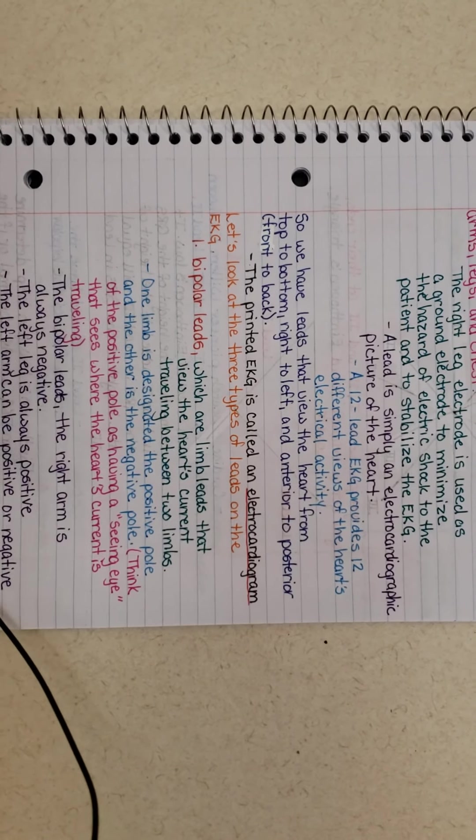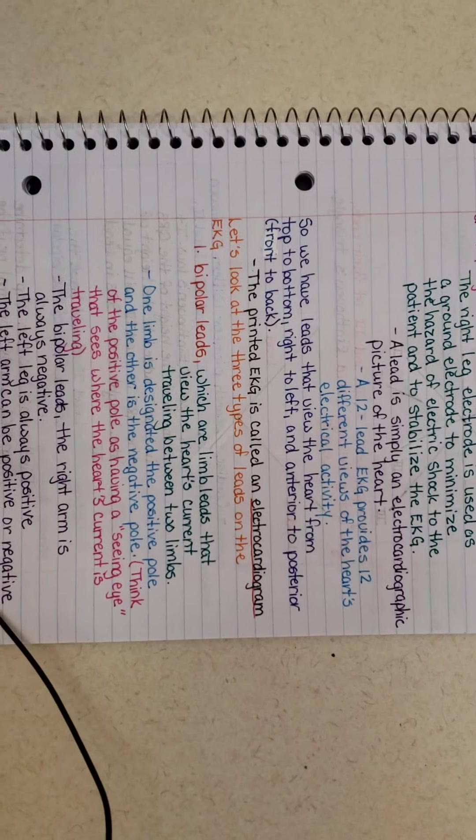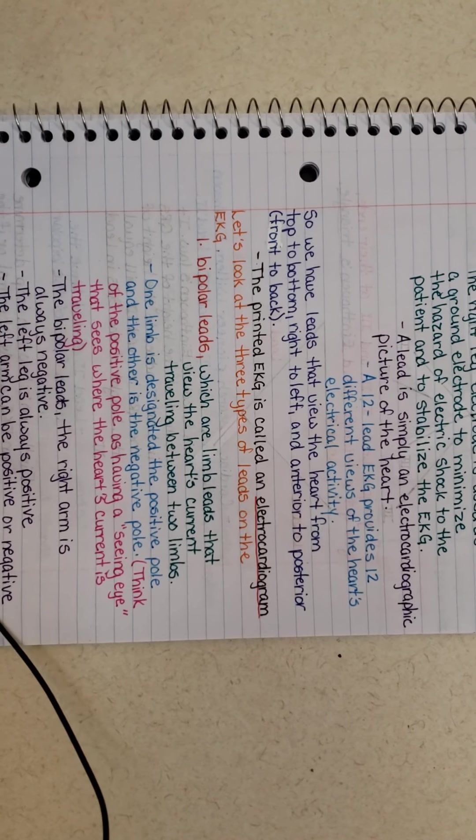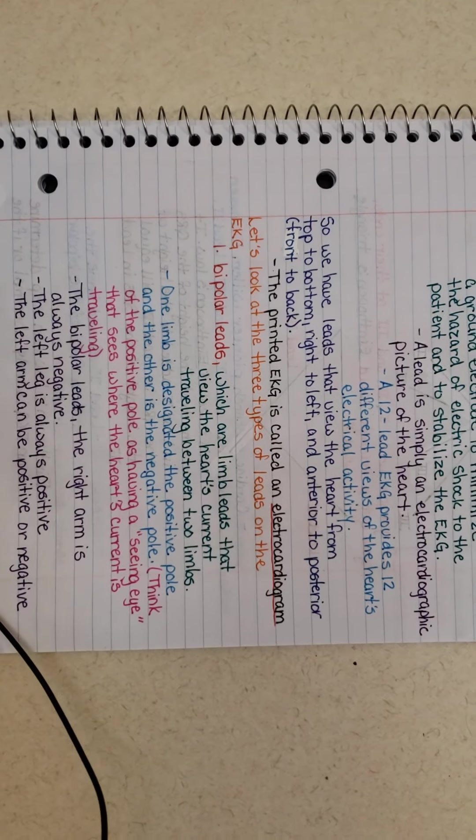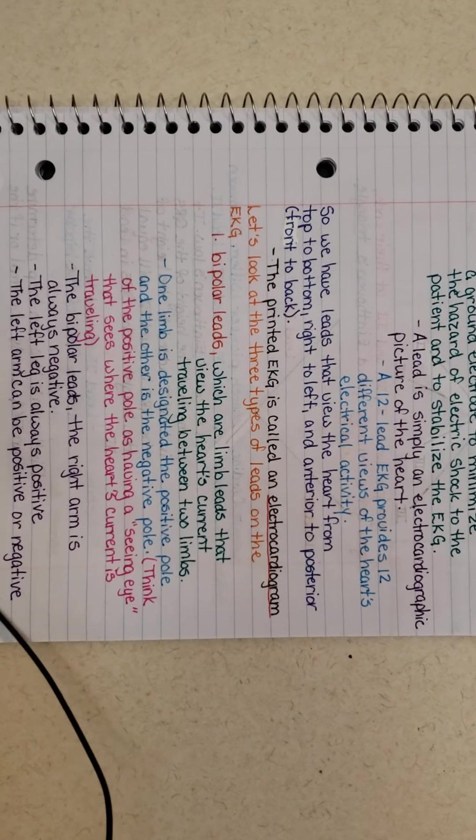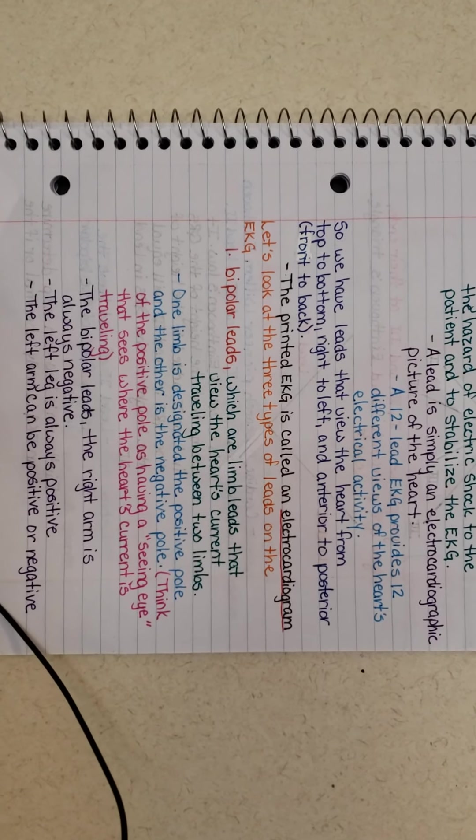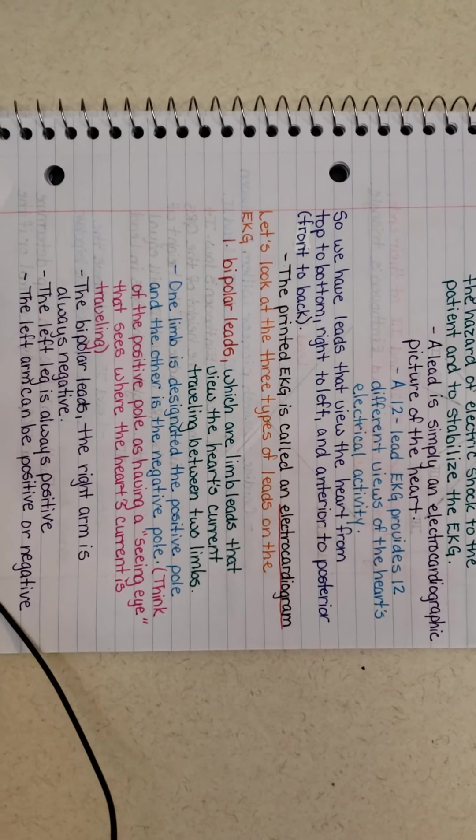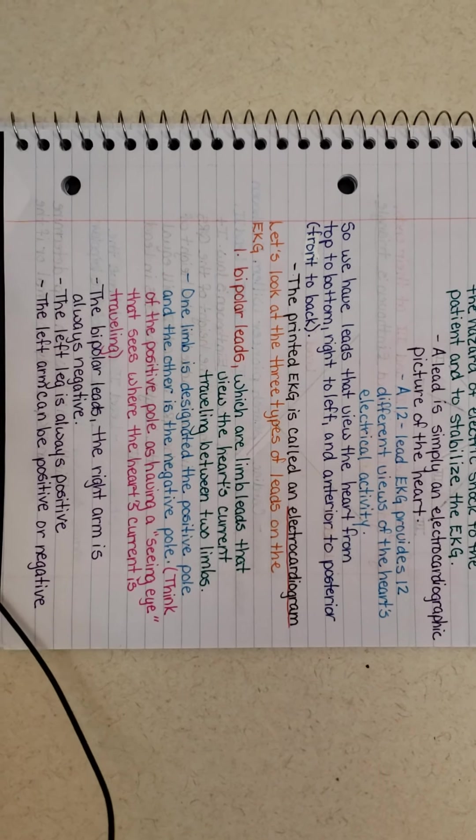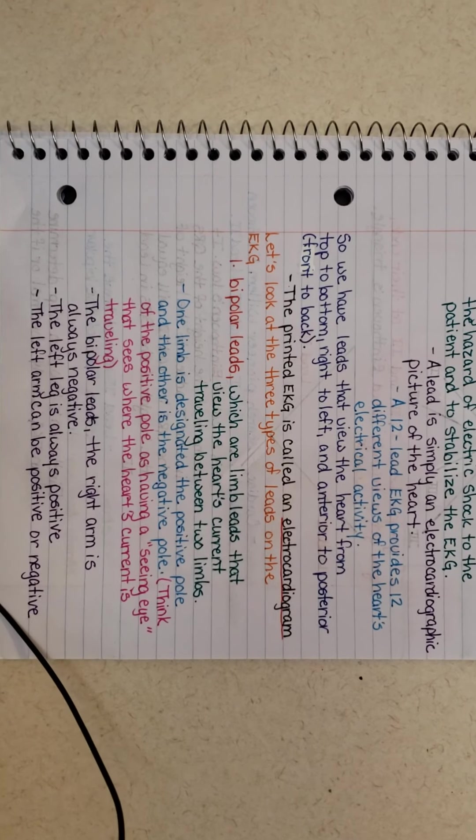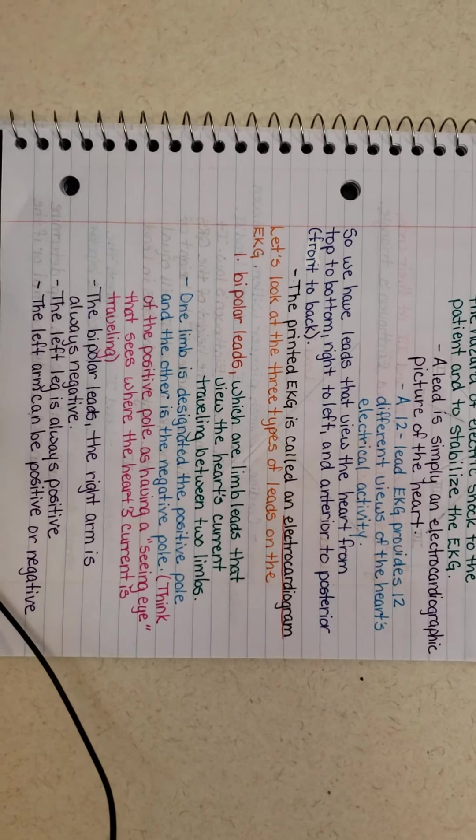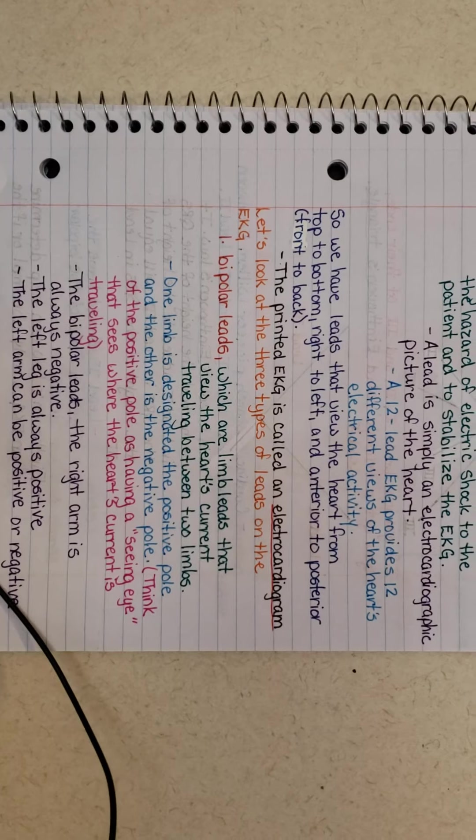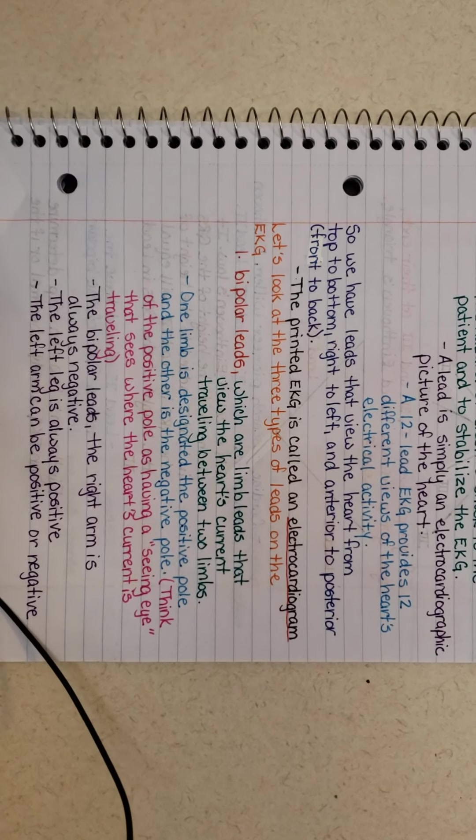But what it does, it takes a photo or collects information from 12 different views of your heart based off of those 10 leads. Your four limb leads or the three active limb leads also not only have lead one, lead two, and lead three. Those three leads are also AVL, AVR, and AVF.